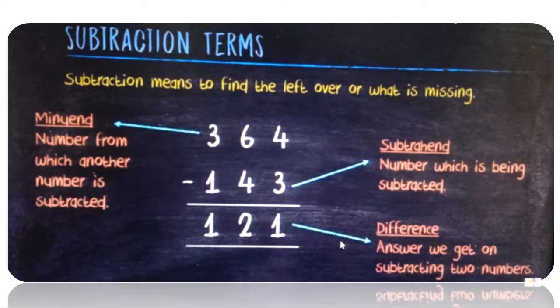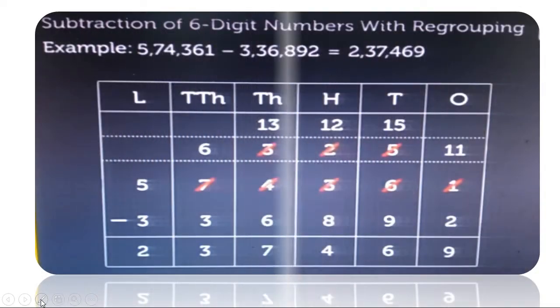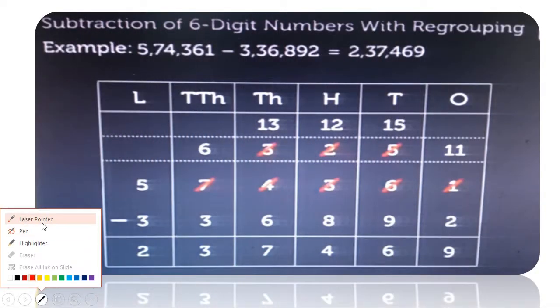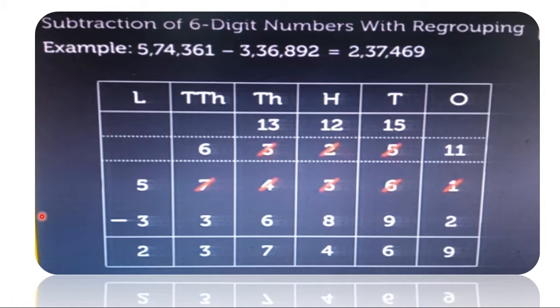Therefore, minuend minus subtrahend equals difference. Now let's learn 6-digit subtraction. Here we have an example: subtraction of 6-digit numbers with regrouping.